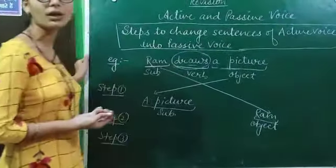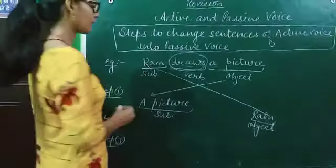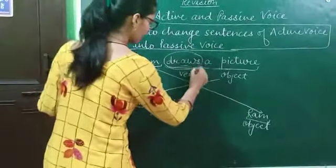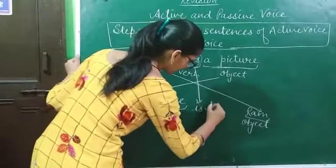So we will use the auxiliary verbs. So it will become 'is drawn'.